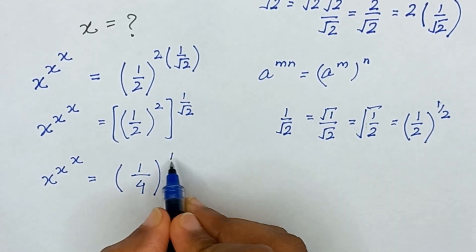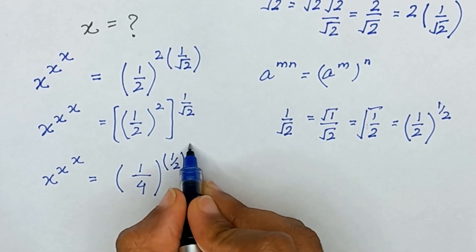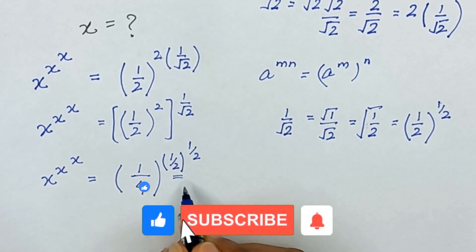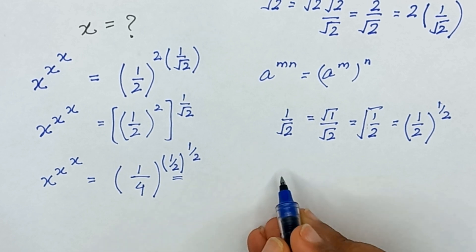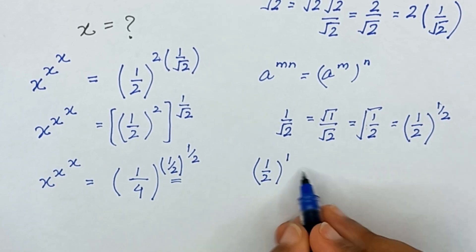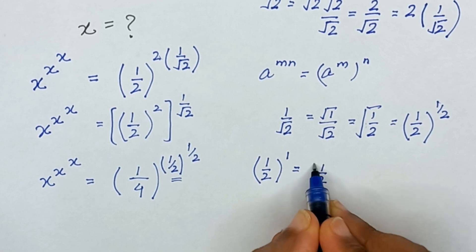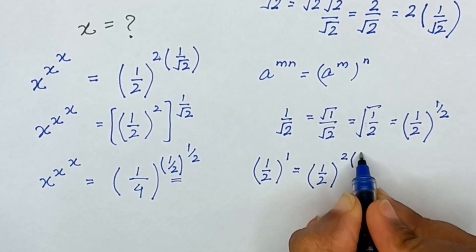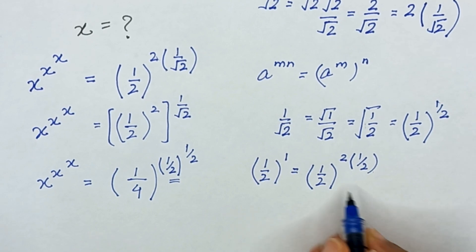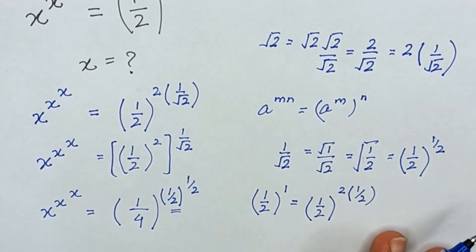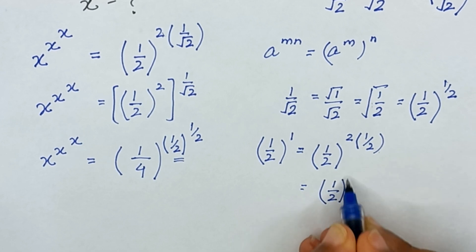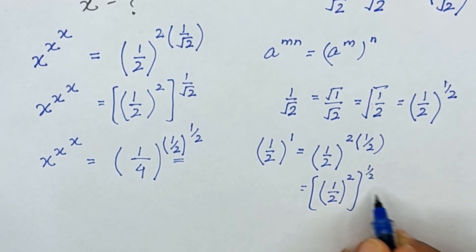Now I will replace 1 divided by square root of 2 with 1 divided by 2 raised to the power 1 divided by 2. I will change this 1 divided by 2 — since 1 divided by 2 is the same as 1 divided by 2 raised to the power 1 — and 1 divided by 2 raised to the power 1 can be written as 2 times 1 divided by 2, which is 1 when the 2s cancel. By using this exponential rule, I can write it as 1 divided by 2 squared, whole raised to the power 1 divided by 2, which is the same as 1 divided by 4 raised to the power 1 divided by 2.